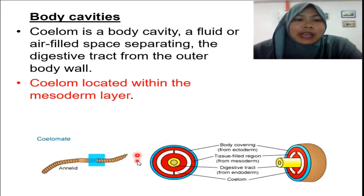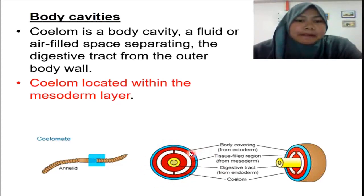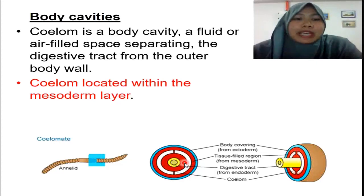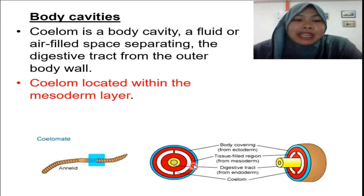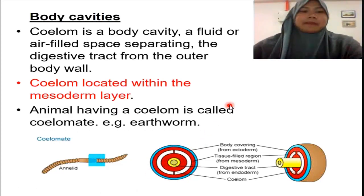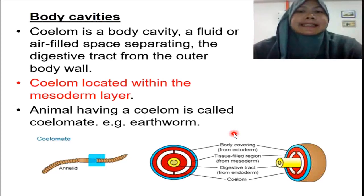You can see an annelid here having three layers of tissue. The blue one is the outer covering, the ectoderm layer; the yellow one is the endoderm layer, the innermost layer forming the lining of the digestive tract; and the red shows the mesoderm layer. The coelom, or body cavity, lies here within the mesoderm layer. Animals having a true body cavity are called coelomates — for example, the earthworm in the phylum Annelida.